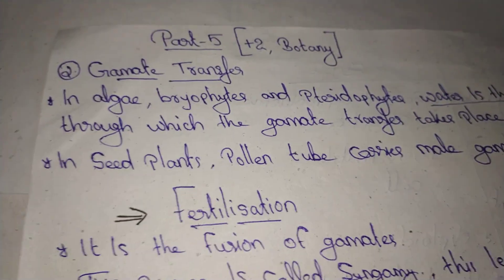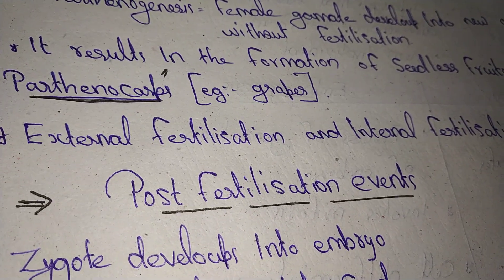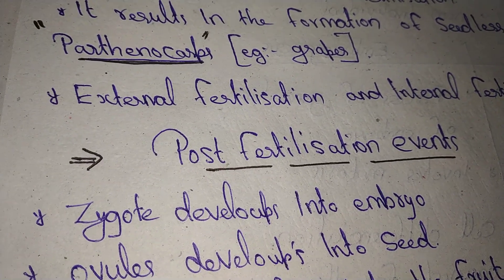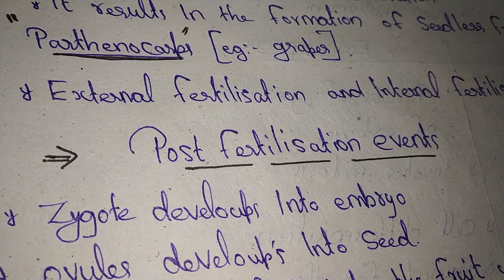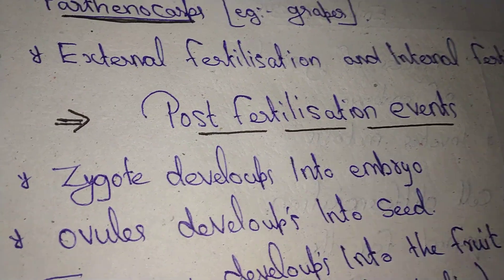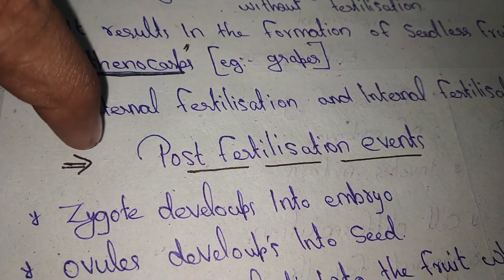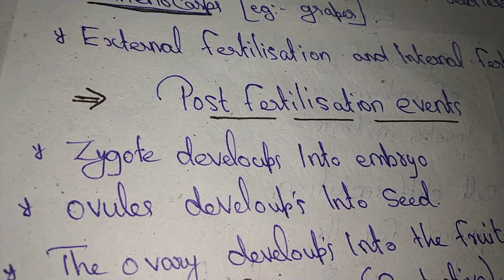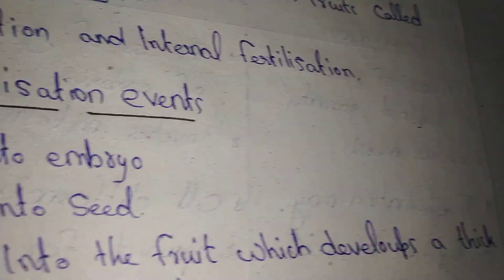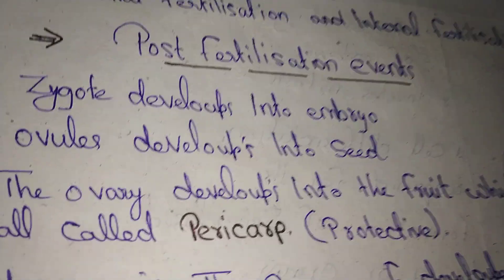The next topic is pre-fertilization events. Now talking about post-fertilization events: the zygote develops into an embryo, the ovule develops into a seed, and the ovary develops into a fruit. The fruit develops a thick wall called the pericarp, which acts as a protective layer.